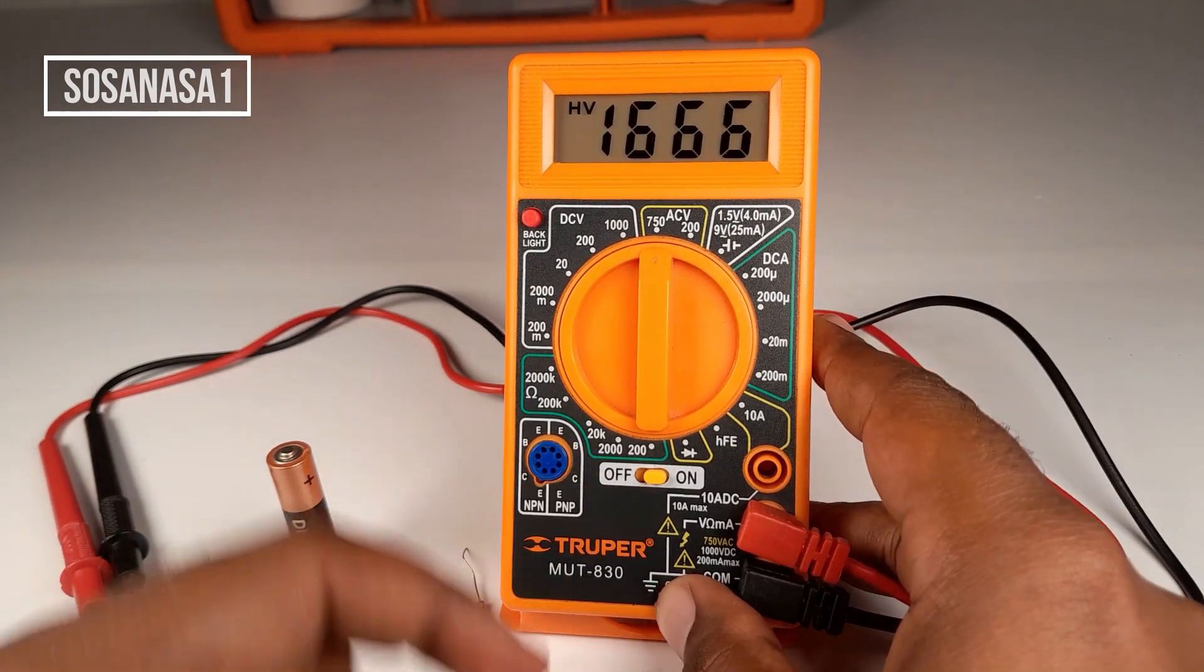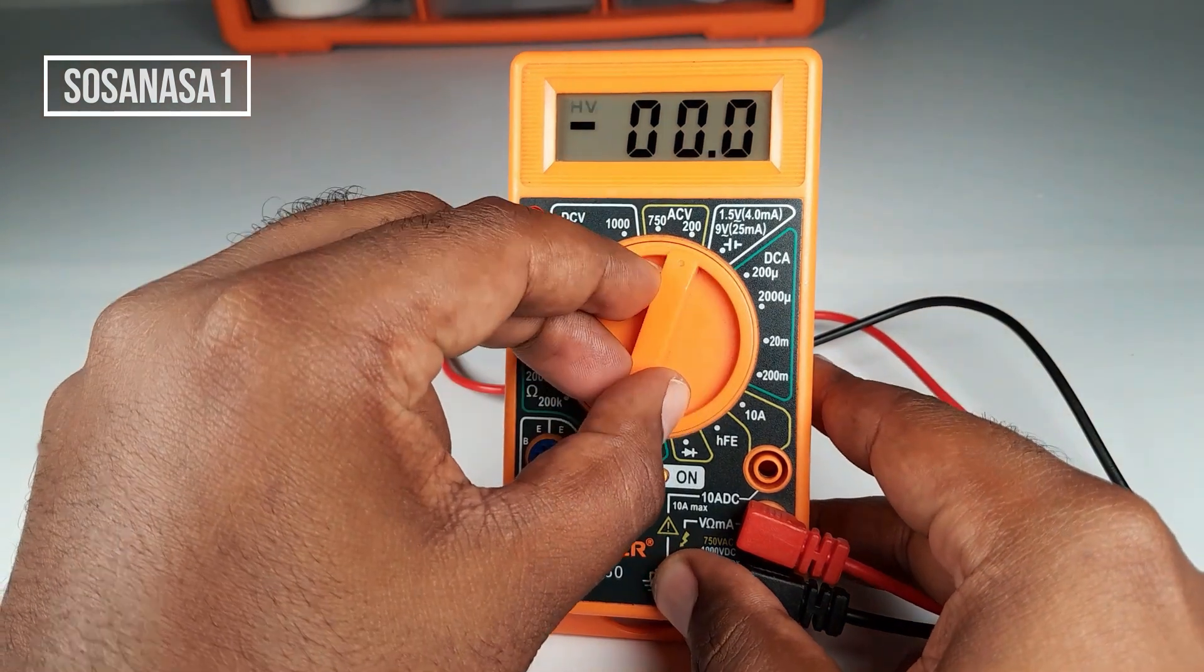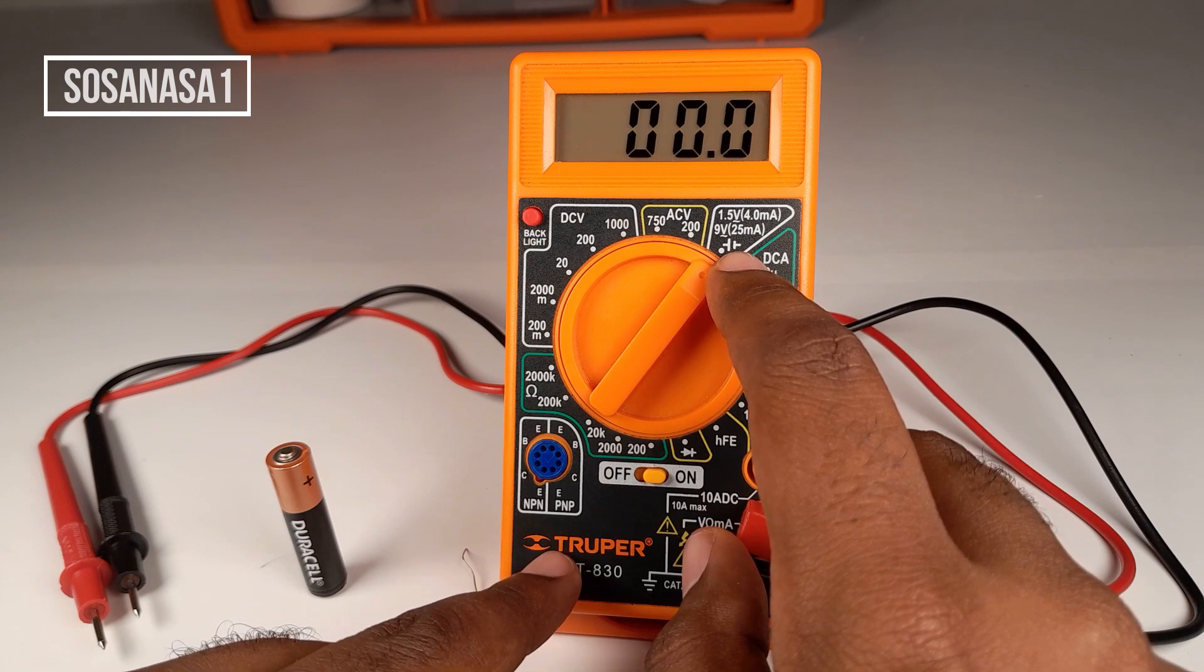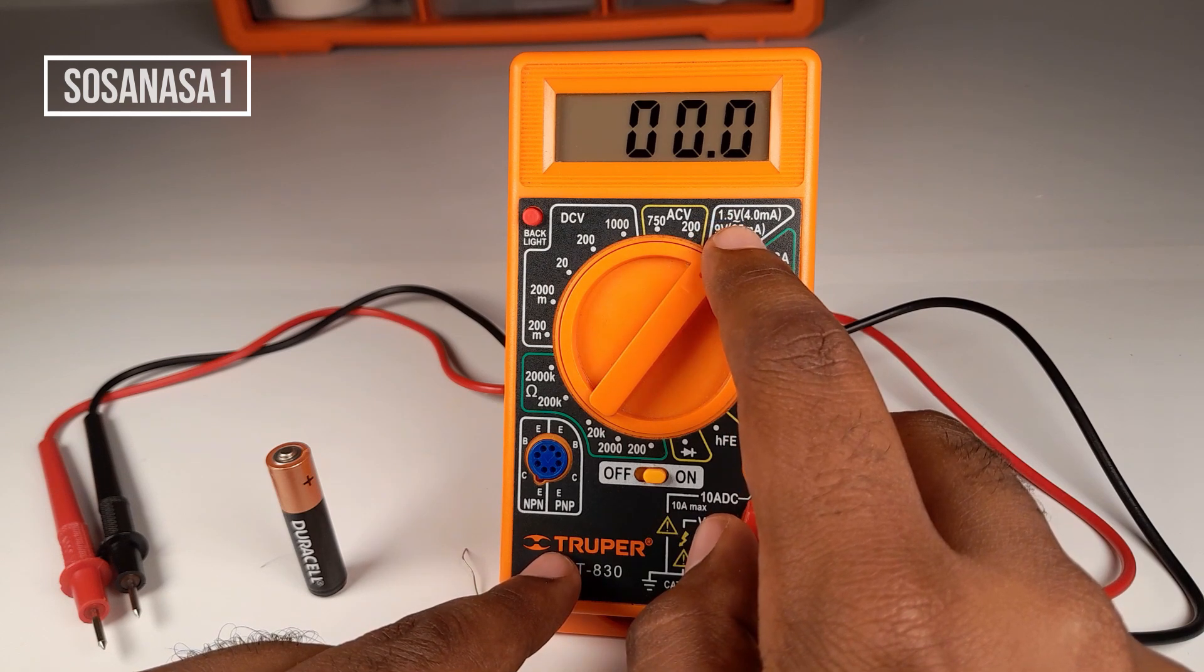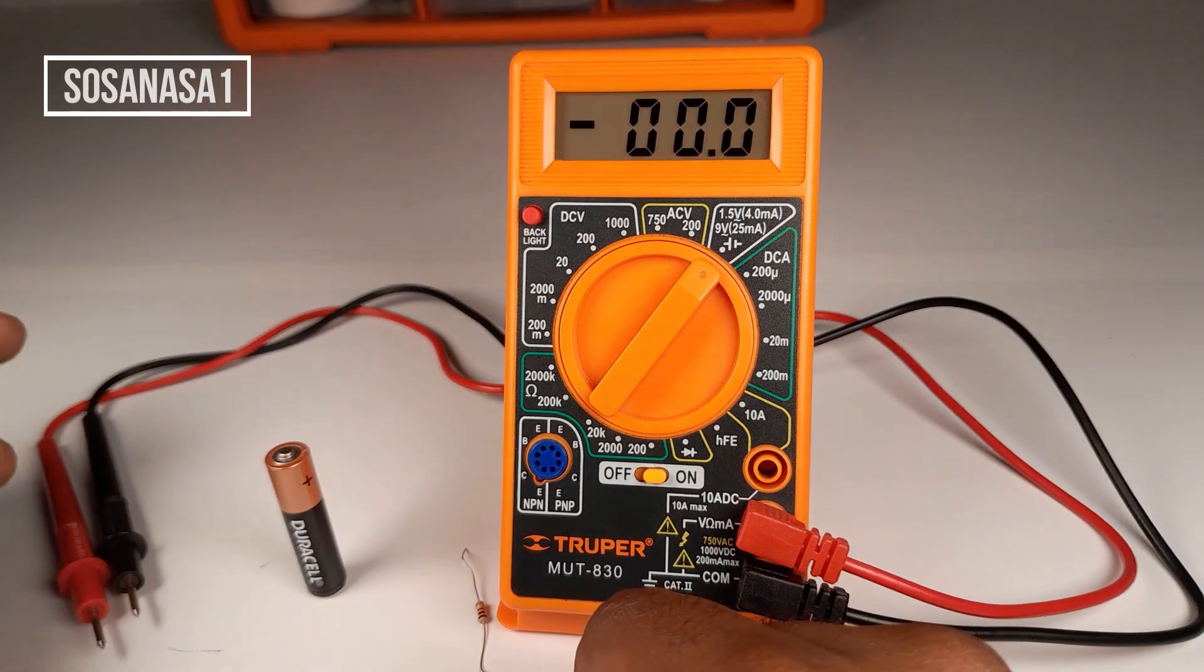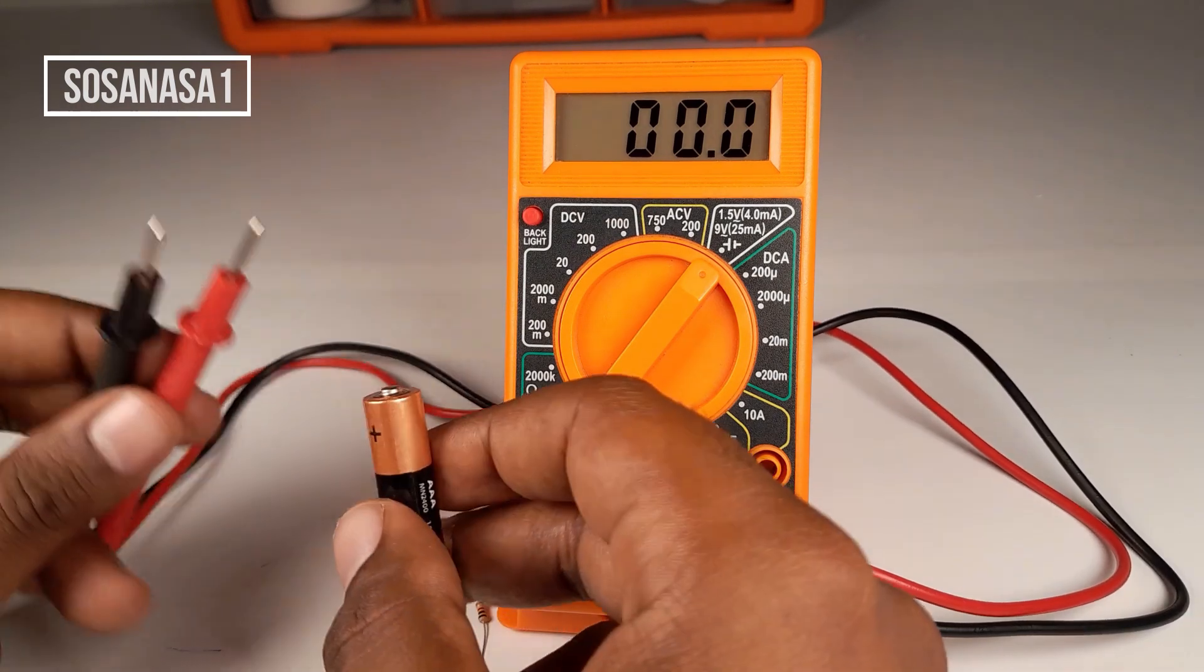First step, turn on this digital multimeter and move the selector to battery test. In this case, you can test 1.5 volt batteries and 9 volt batteries. Take the battery and take these two probe tips.